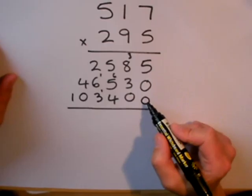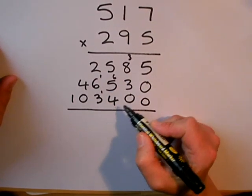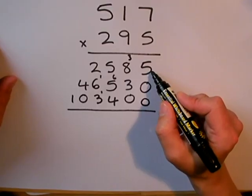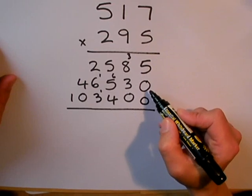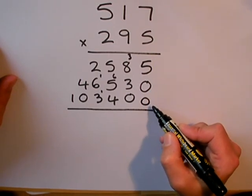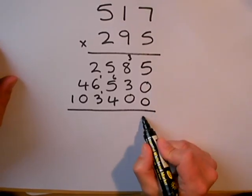Because I've put my 0s, I know that my digits are in the right place for adding up. So, this is 517 multiplied by 5. This is the answer to 517 multiplied by 90. And lastly, 517 multiplied by 200. I need to add all these answers up.